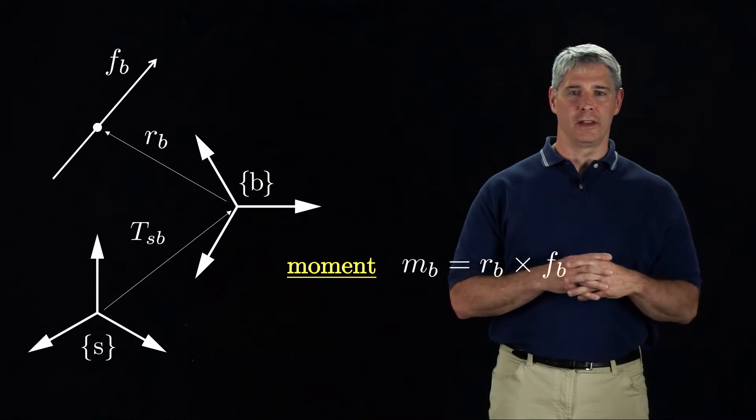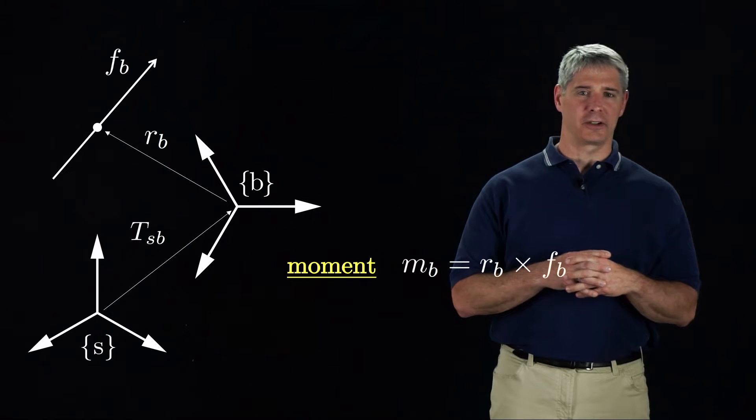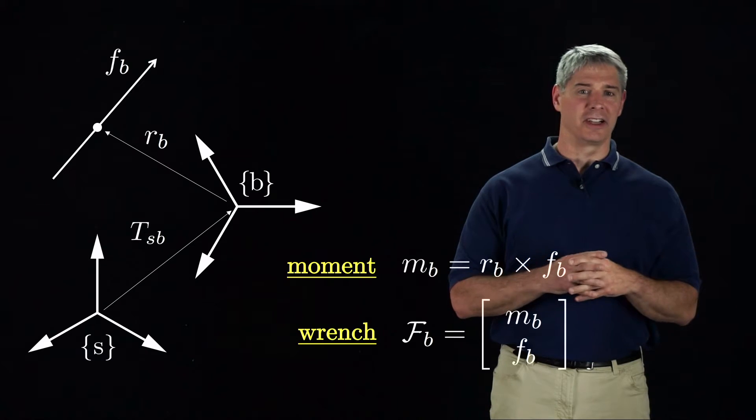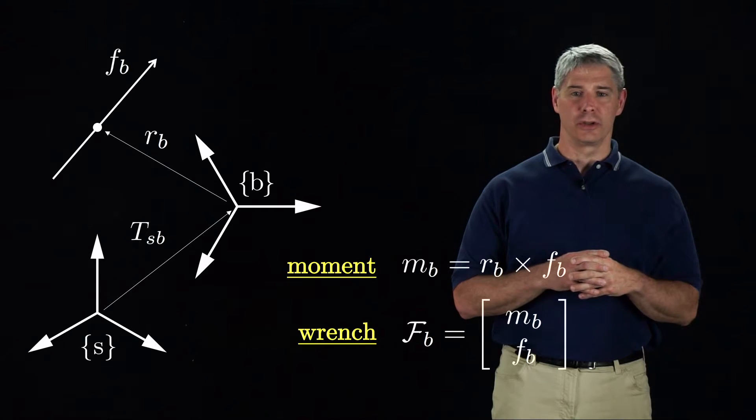We can package the moment and the force together in a single six-vector called the wrench, just as we package the angular and linear velocity of a rigid body into a twist.